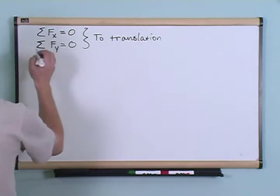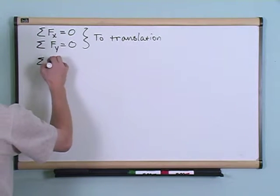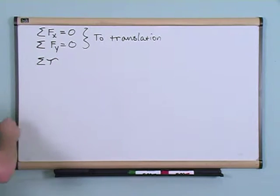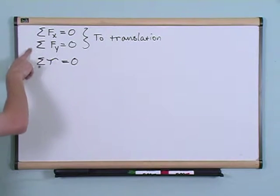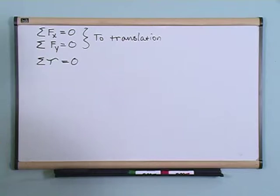Now the condition for rotational equilibrium is that the sum of the torques, defined as we have talked about earlier, must also equal zero. So here it's telling you you're not doing any movement, here it's telling you that you're not doing any rotation.